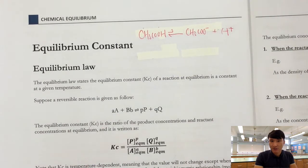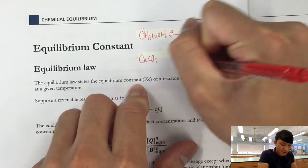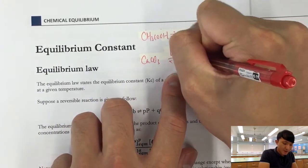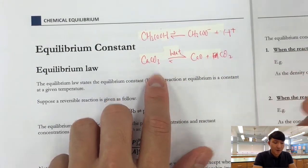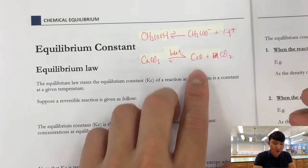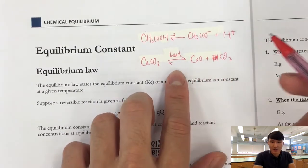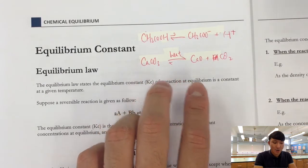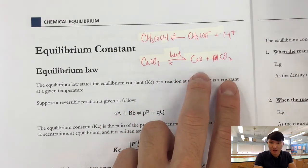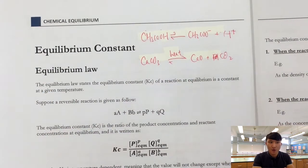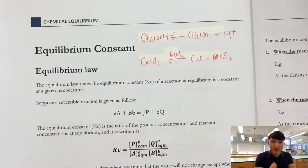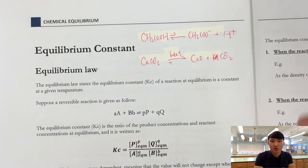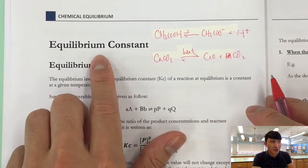Another example is the thermal decomposition of calcium carbonate. When we provide sufficient heating, the majority of the calcium carbonate decomposes to form calcium oxide and carbon dioxide. In this case, the equilibrium favours the product side. This shows that for different reactions, the equilibrium could favour the product or the reactant. But how can we quantitatively show the extent to which the equilibrium favours one side? That is why we need to know the equilibrium constant.